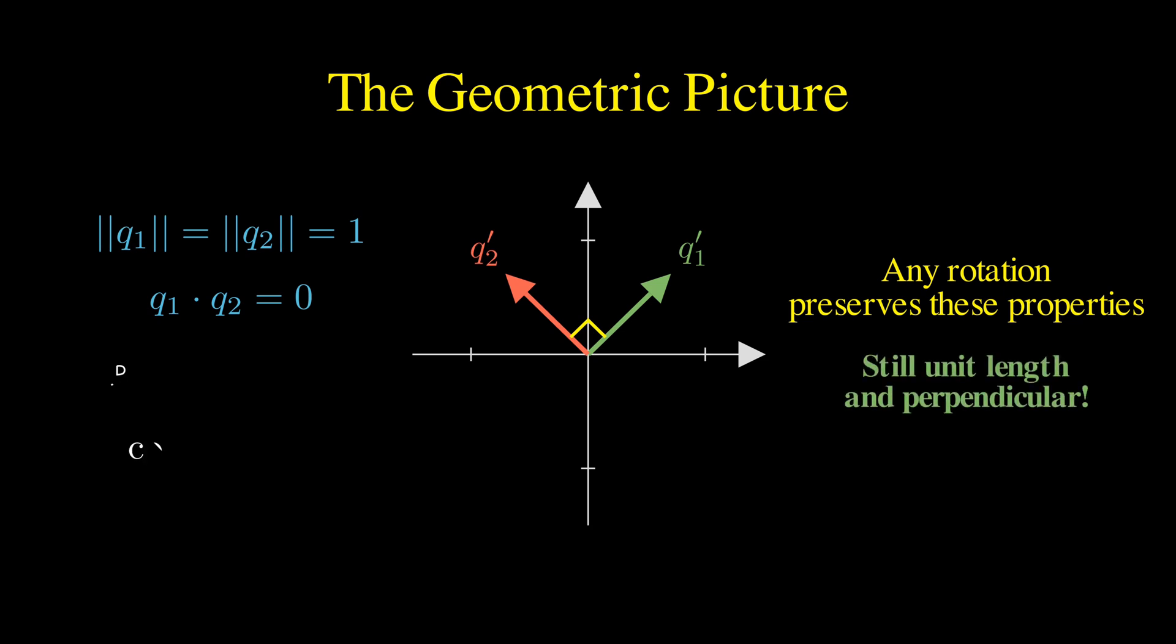And the matrix that performs this rotation, with entries cosine theta and minus sine theta in the first row and sine theta and cosine theta in the second row, that's an orthogonal matrix.